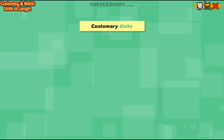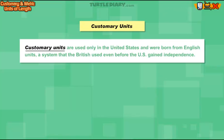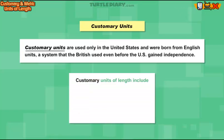Customary units are used only in the United States and were born from English units, a system that the British used even before the U.S. gained independence. Customary units of length include units like inch, foot, yard, and mile.